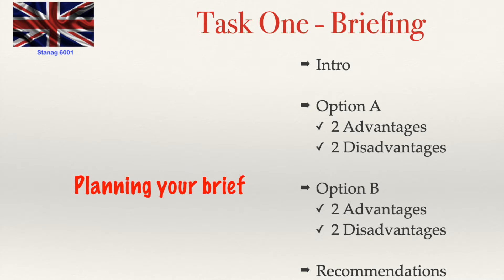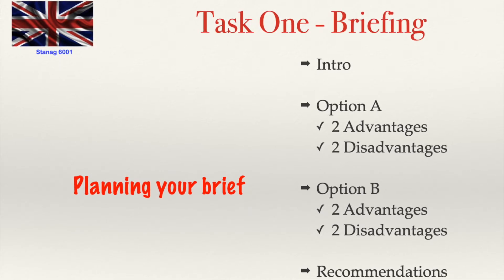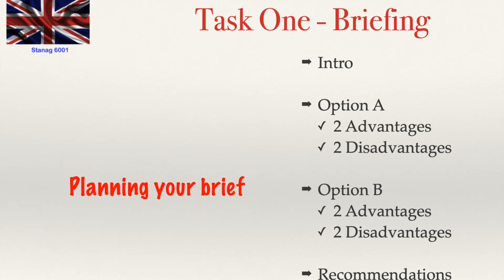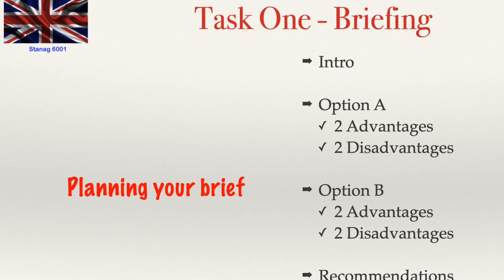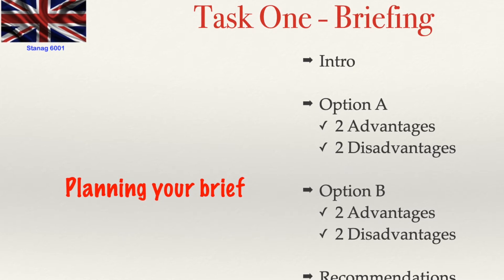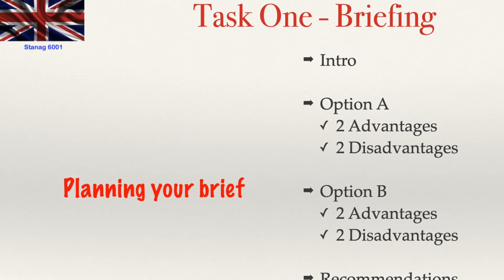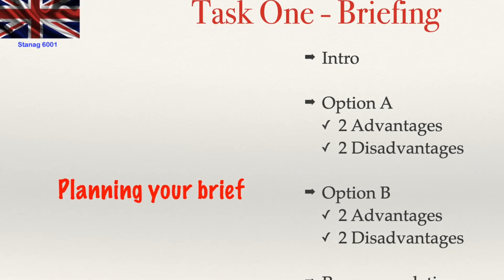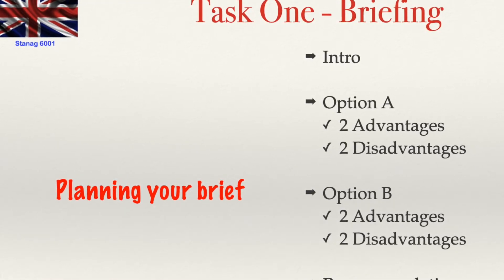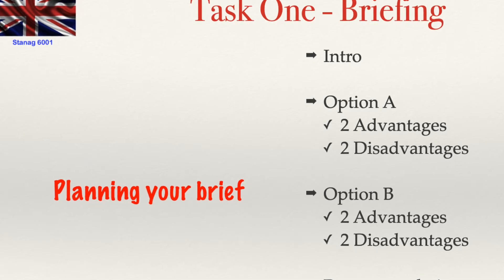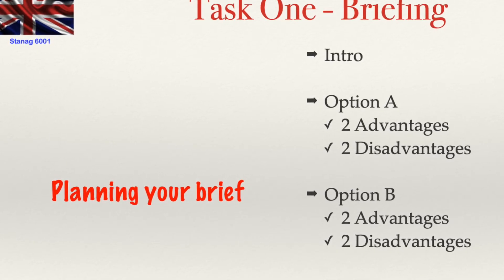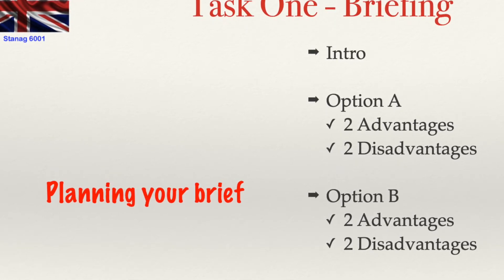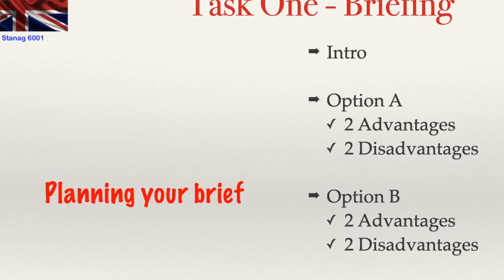During the briefing, you have to present two options to solve a potential problem. You then have to give your recommendation as to which is the best option. You should try and give at least one advantage and one disadvantage for each option. However, giving two advantages or disadvantages is obviously a benefit. The examiner will not only grade you on your vocabulary and grammar, but also on the structure of your briefing, so you must provide smooth transitions.